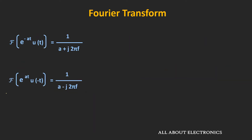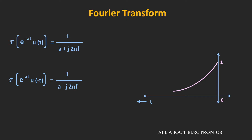Similarly, if we have another function that is e to the power at times u(-t), then its Fourier transform will be equal to 1 divided by (a minus j2πf). Or if we write it in terms of ω, then it is equal to 1 divided by (a minus jω), while for the other function, it is equal to 1 divided by (a plus jω), where ω is equal to 2πf. So we will use these two functions for deriving the Fourier transform of another useful function.